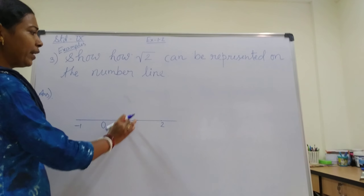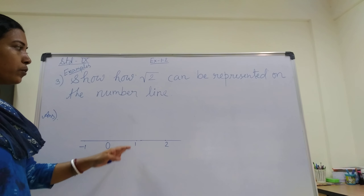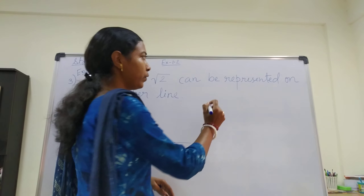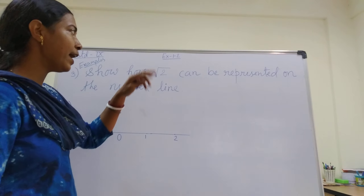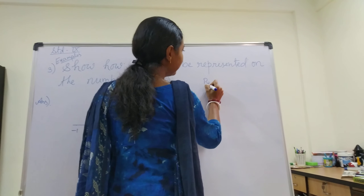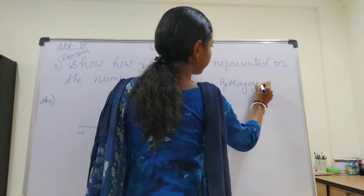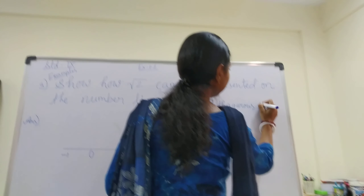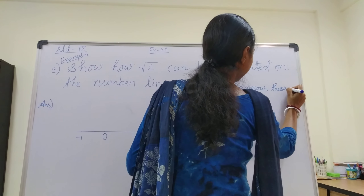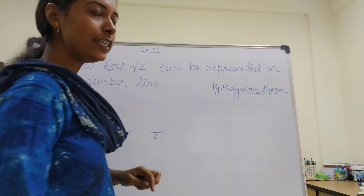In this number line, there is one process. So before going to this process, I have to say something. To get root 2, there is a theorem known as the Pythagoras theorem. Pythagoras theorem is related to a right angle triangle.